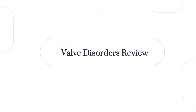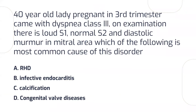Let's start with the valve disorder review. S1 is the closure of the mitral and tricuspid valve. S2 is the closure of the aortic and pulmonary valve. The diastole is the filling of the right and left ventricle from the right and left atrium. The valve between the atrium and the ventricle is the tricuspid or mitral.